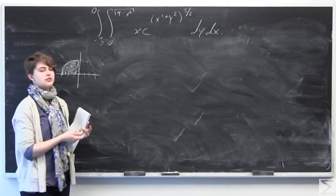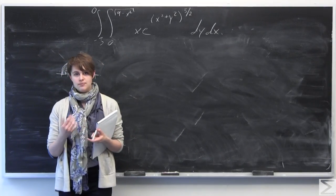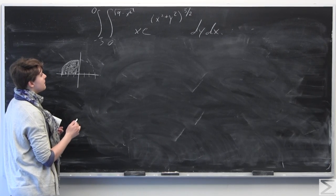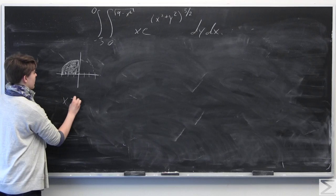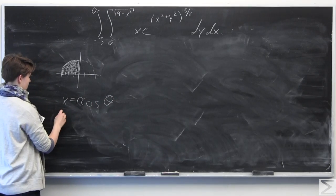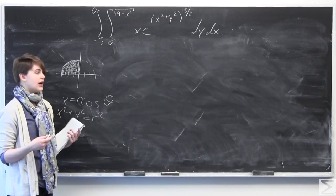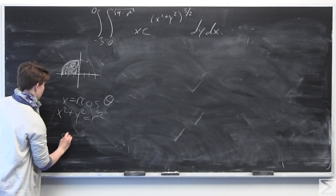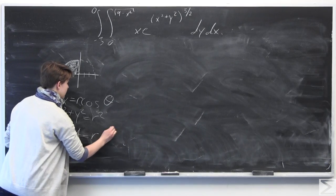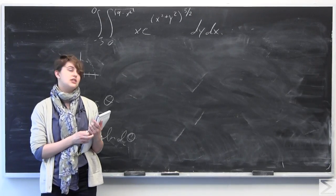We can easily switch our bounds of integration into polar coordinates. To do so, we should remember a few key facts: x is equal to r cosine theta; x squared plus y squared is equal to r squared; and our area differential dA, which equals dX dY, is going to be equal to r dr d theta. Remember we have an extra r term, which we'll need to add into the integral.